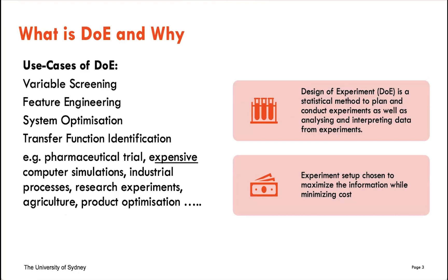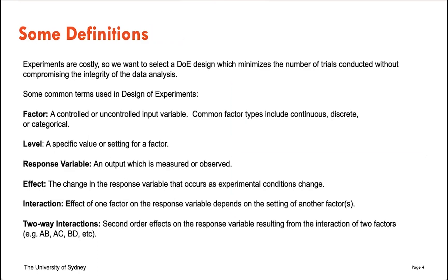What is DoE? It's basically a statistical method to design, plan, and conduct experiments, and to analyze and interpret the data. The main goal is to choose an experimental setup that maximizes the information while minimizing the costs — in our case, minimizing computation runtime for simulations. It has a large range of use cases from variable screening, feature engineering, system optimization, and transfer function identification for signal processing, and has been used across many disciplines including pharmaceutical trials, industrial processes, agriculture, and computer simulations in geoscience.